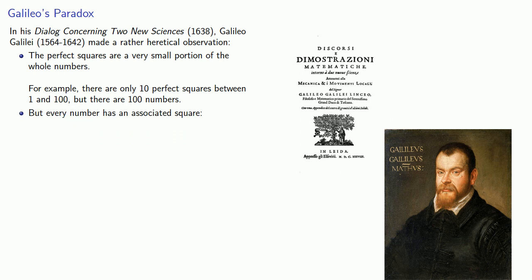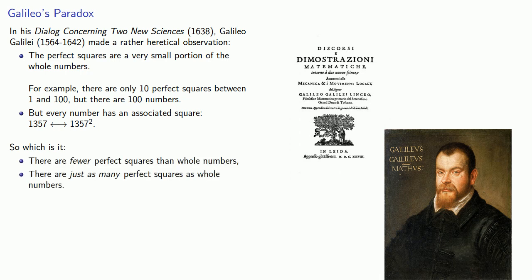But every number has an associated perfect square. For example, the number 1,357 is associated with the number 1,357 squared. So which is it? There are fewer perfect squares than whole numbers, or there are just as many perfect squares as whole numbers?